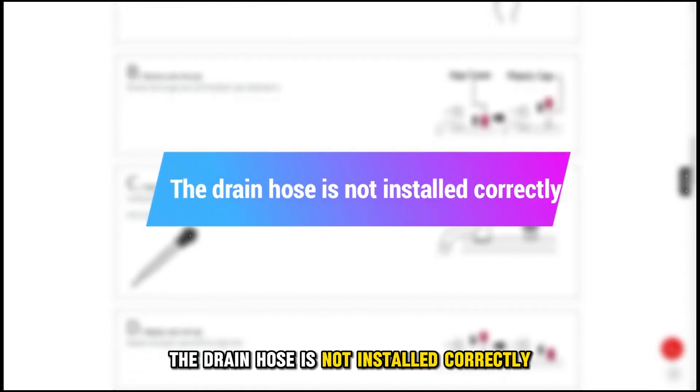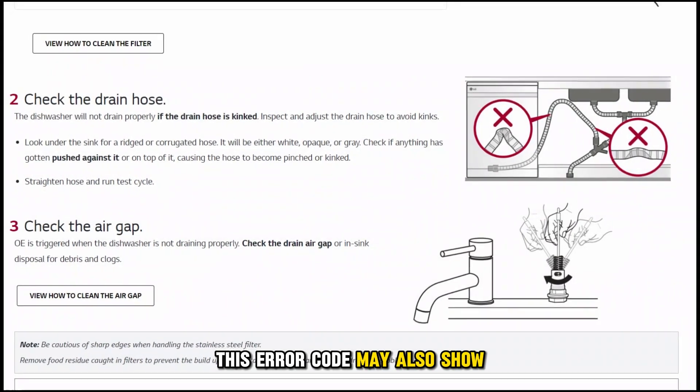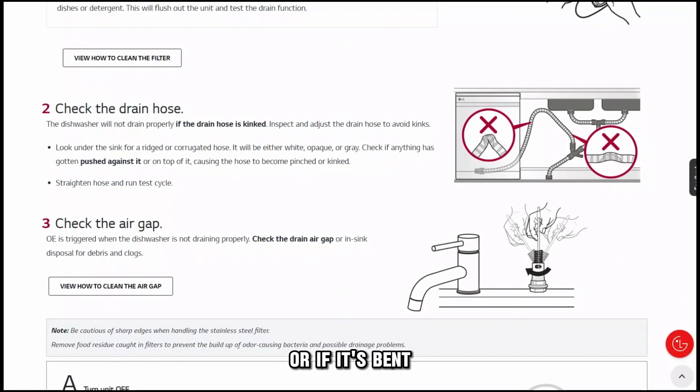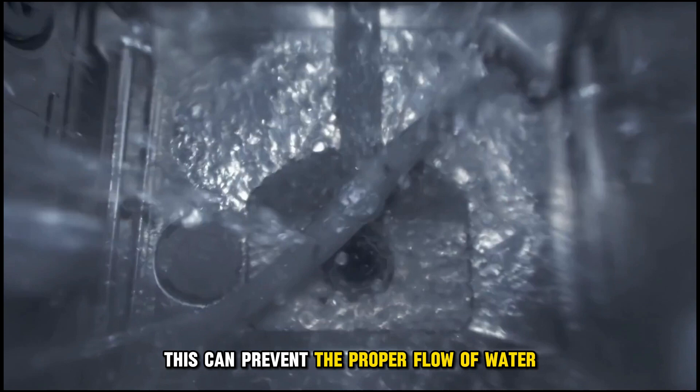The drain hose is not installed correctly. This error code may also show when the drain hose is not connected correctly or if it's bent. This can prevent the proper flow of water in the dishwasher.